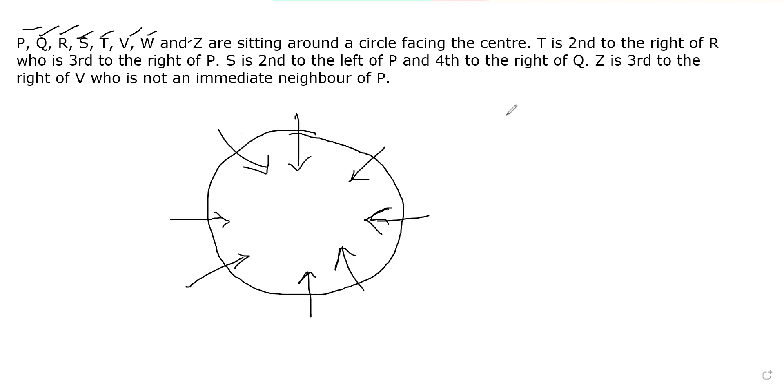T is second to the right of R. So suppose R is here. T is second to the right. So T is here. Sorry, this is third. So T is here. T is second to the right who is third to the right of P. So R is third to the right of P. So R is here. So this is P. This is done.